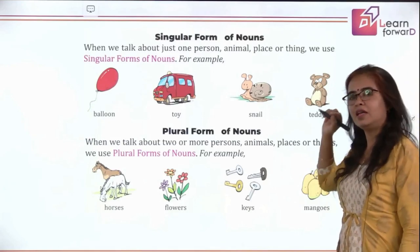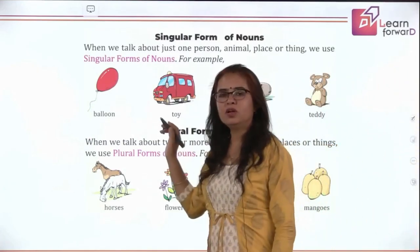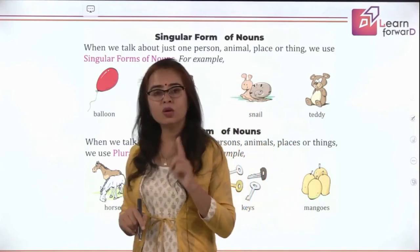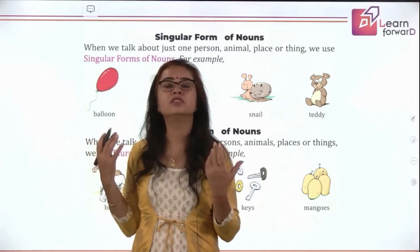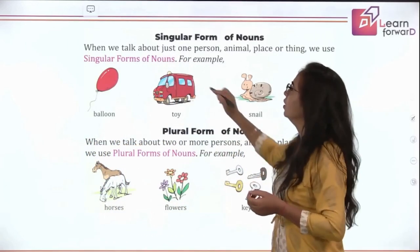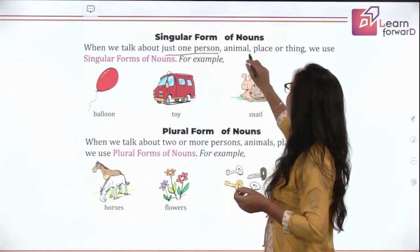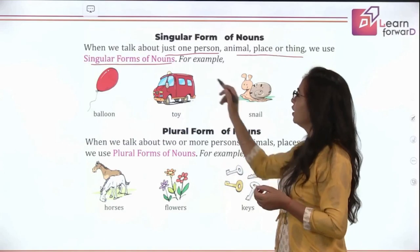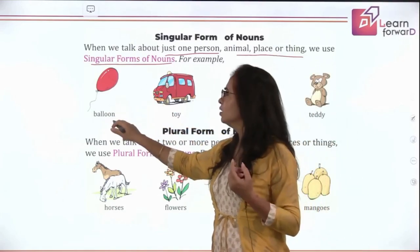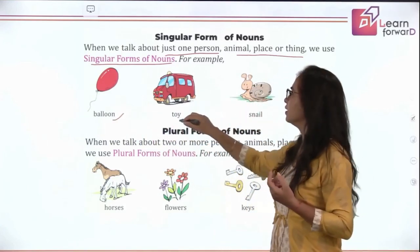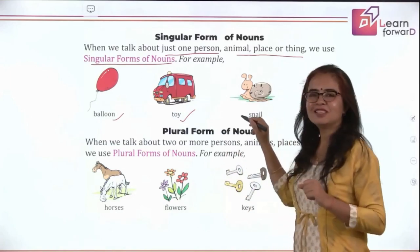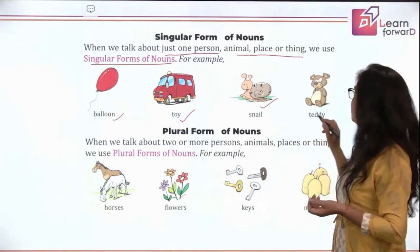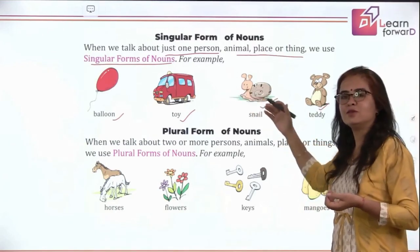Now we will be learning more about singular and plural nouns. Singular means when we talk of only one — that is a singular noun. When we talk of two or more, that is a plural noun. When we talk about just one person, animal, place or thing, that is the singular form of the noun. For example: one balloon, one toy, one snail, one teddy bear — all these are singular nouns.